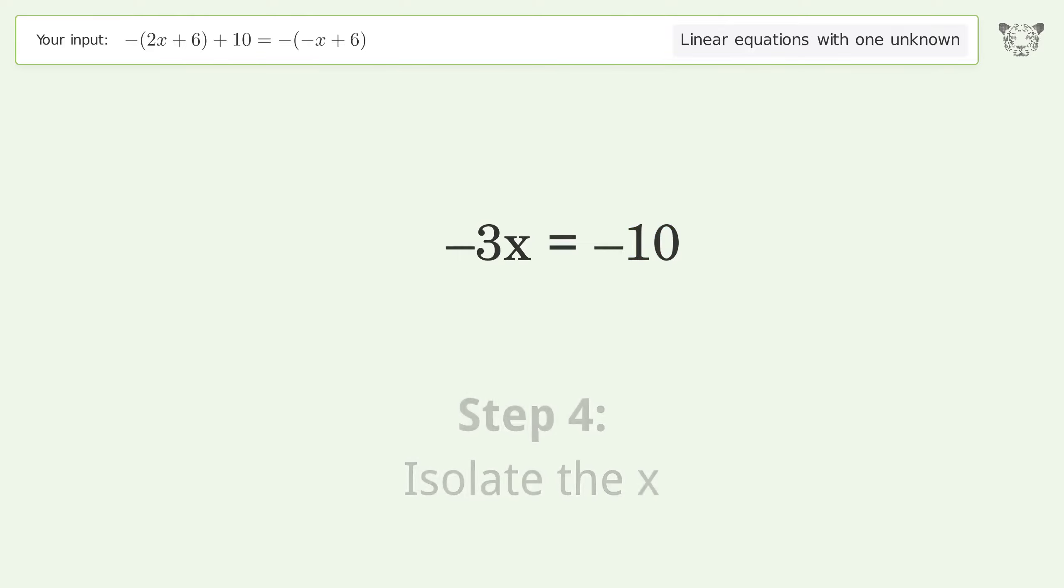Isolate the x. Divide both sides by negative 3. Cancel out the negatives. Simplify the fraction.